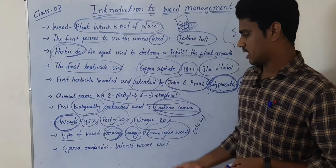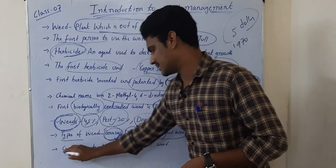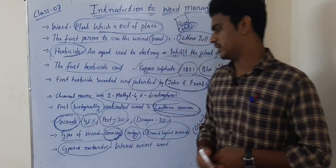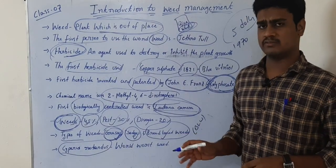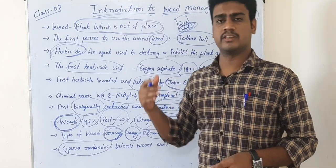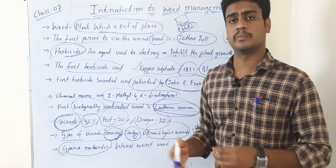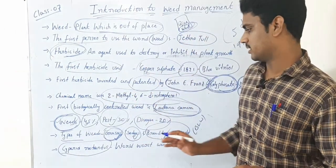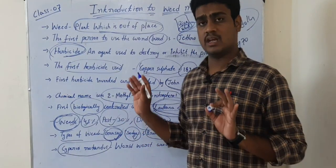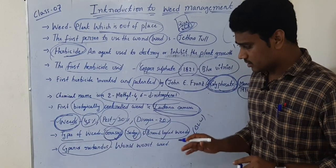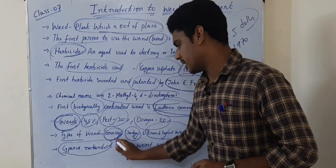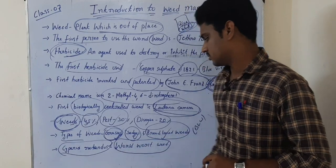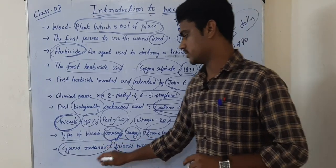Cyperus rotundus is one of the most noxious weeds. It can reproduce by seeds, tubers, or other means in a very vigorous manner. That is why it is named the world's worst weed — the world's worst weed is Cyperus rotundus.